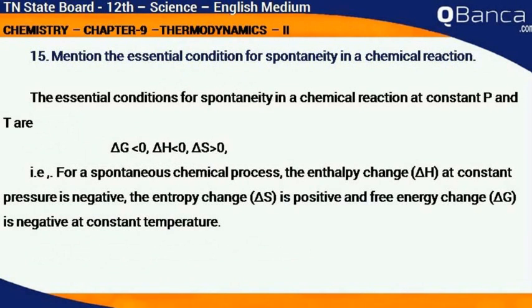Mention the essential conditions for spontaneity in a chemical reaction. The essential conditions for spontaneity in a chemical reaction at constant pressure and temperature are: ΔG less than zero, ΔH less than zero, and ΔS greater than zero. That is, for a spontaneous chemical process, the enthalpy change ΔH at constant pressure is negative, the entropy change ΔS is positive, and the free energy change ΔG is negative at constant temperature.